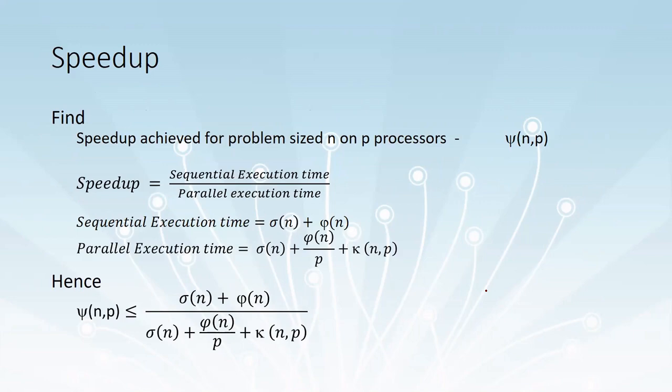Speedup is denoted as psi of n, p, where n is the problem size and p is the number of processes. Speedup is the ratio between sequential execution time and parallel execution time. If a program is executed by only one processor, the total time taken would be sigma of n plus phi of n.